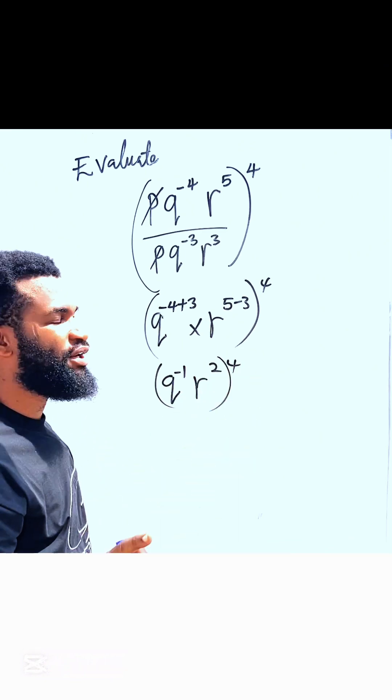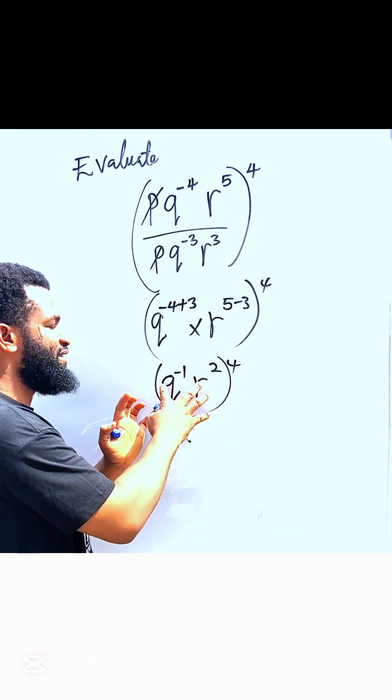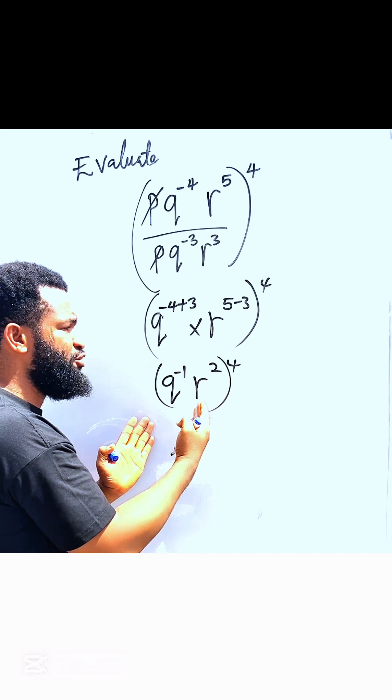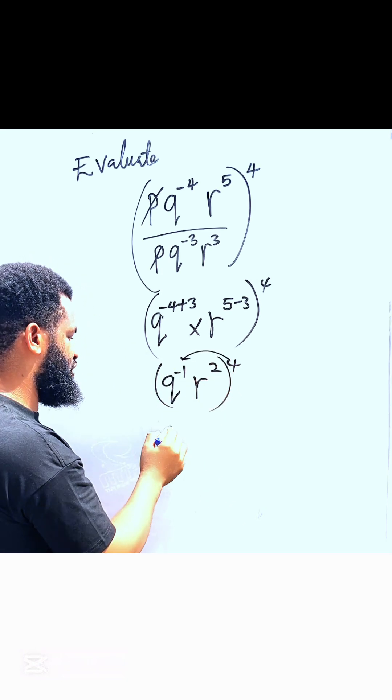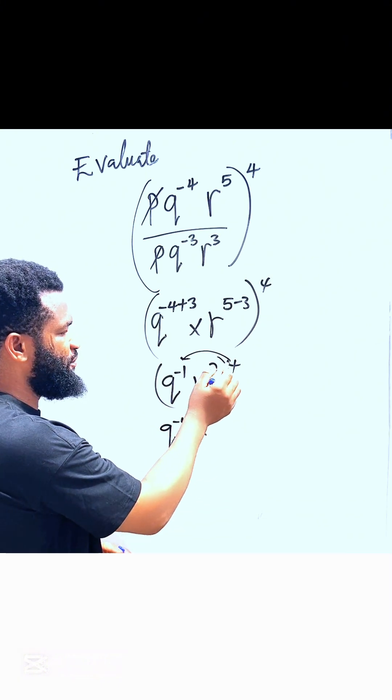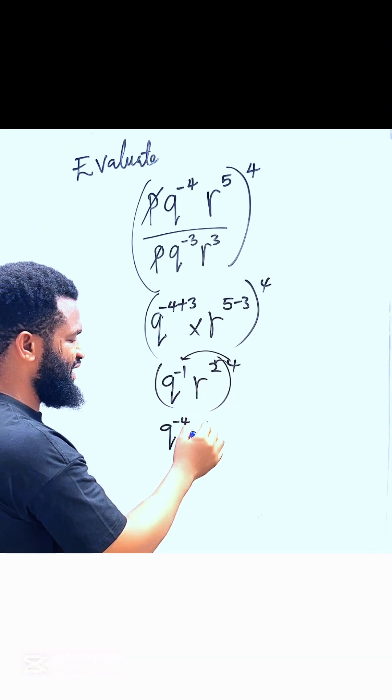I'm going to apply power law. Power law says when the things inside the bracket is raised to a new power outside the bracket, those powers you multiply. This is going to be q raised to minus 4, and then 4 multiplied by 2 is going to be 8.